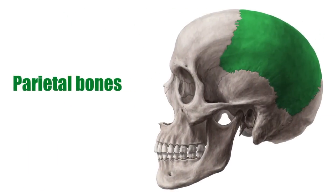The parietal bones are situated at the crown of the skull and provide a roof over part of the anterior, the entire middle, and some of the posterior cranial fossae, which contain the various lobes of the brain, along with the sinuses, the meninges, and their corresponding vessels.